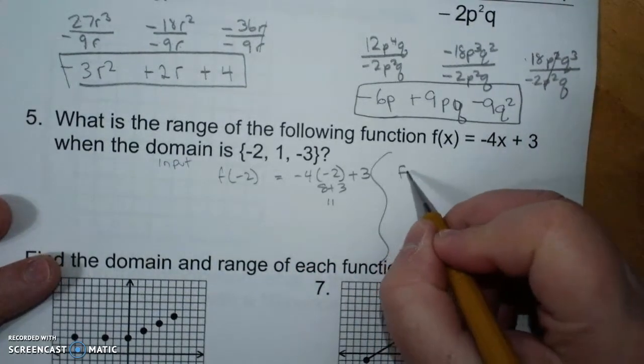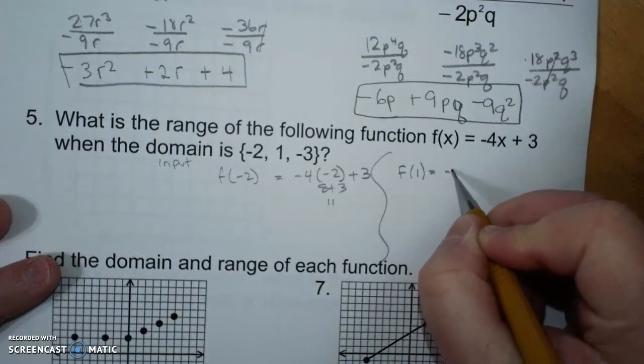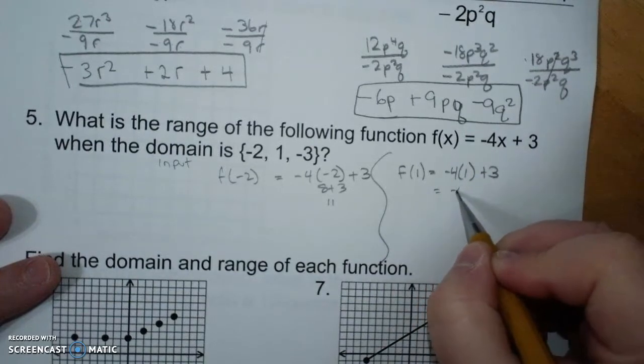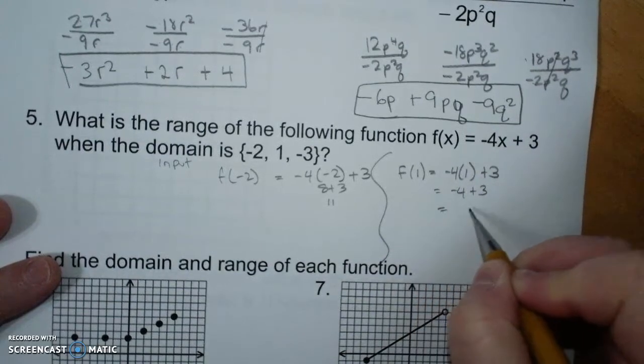F of 1 is negative 4 times 1 plus 3 equals negative 4 plus 3 equals negative 1.